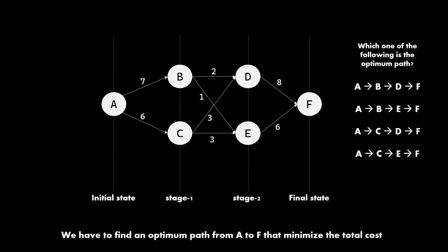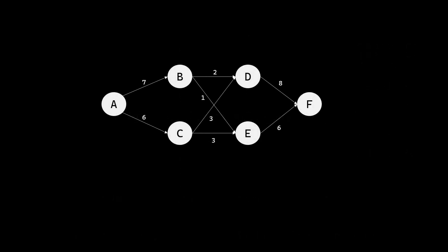Dynamic programming gives a way of solving this problem. Here is how the algorithm works. We start from the last stage. The least cost to go to the destination state F from D is eight. This is easy to determine as there is only one possible way to go to F from D. Notice that we have also marked the optimum direction with a small green arrow. Similarly the optimal cost to go from E to F is six.